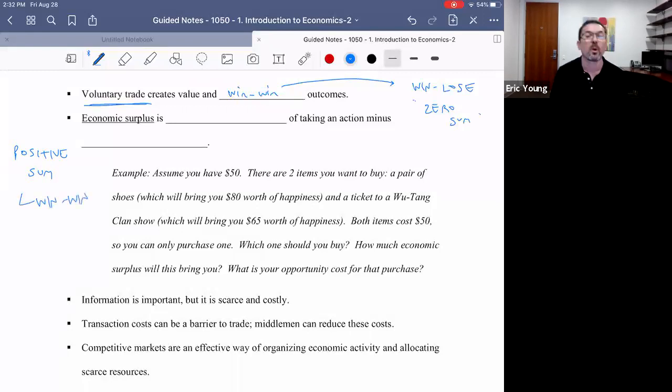A positive-sum game is a win-win game. We believe in economics that voluntary trade creates patterns of win-win. Let's tie this into the utility and profit incentives that individuals and firms seek. We believe that voluntary trade creates value and a win-win outcome.